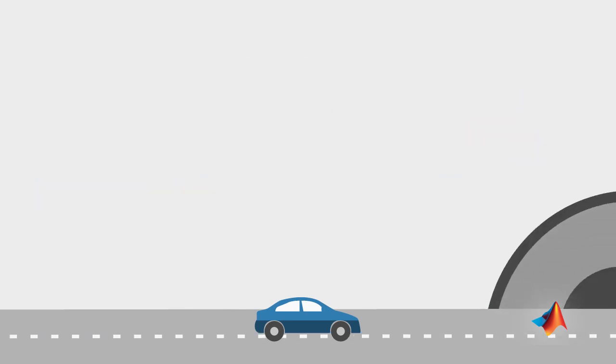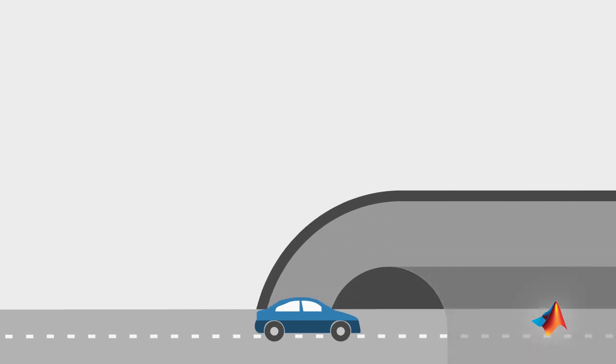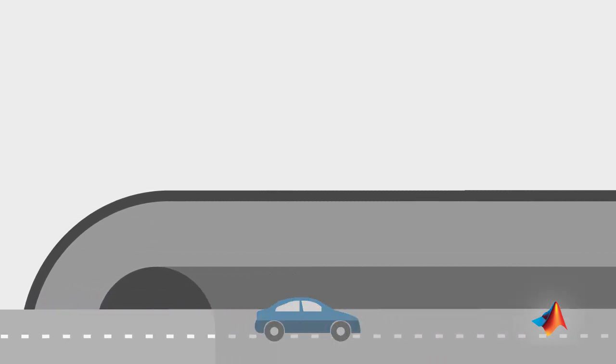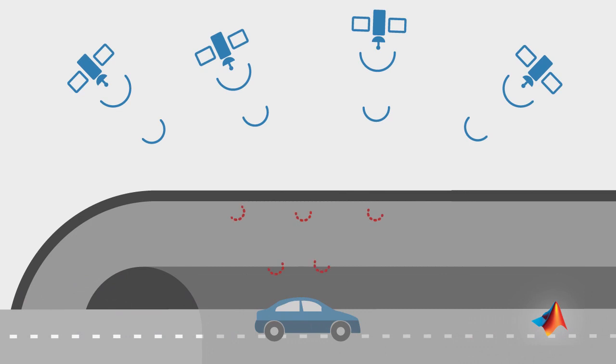If you live in Boston as I do, you've got to travel through the Big Dig, a very, very long tunnel. And in the tunnel, it gets harder to estimate your position through GPS since the receiver's line of sight to satellites is blocked and GPS signal is weak.